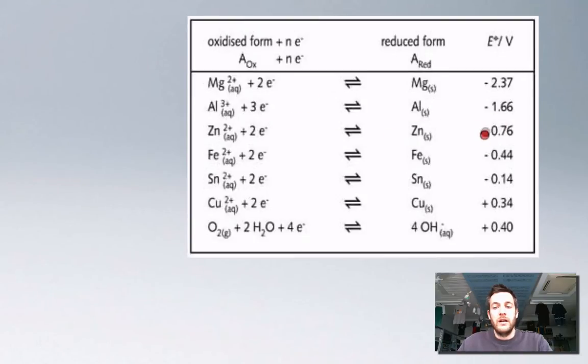And zinc, with a reduction potential of minus 0.76 volts, isn't as good as either of them. So in other words, zinc isn't as good at dissolving and turning into ions and giving up electrons as aluminium or magnesium are.